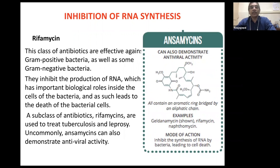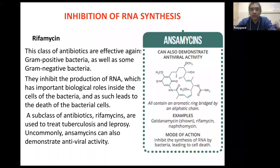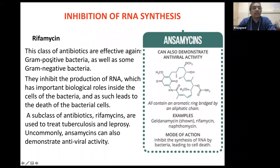Rifamycin affects RNA synthesis and is one of the major drugs for controlling tuberculosis (TB). It is effective against various gram-positive bacteria and many gram-negative bacteria. This class includes rifampicin and rifampin.